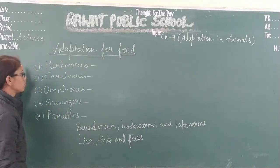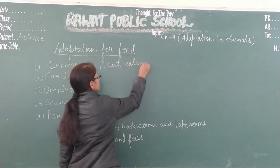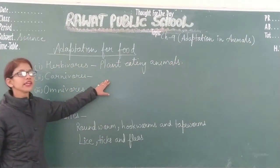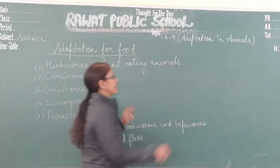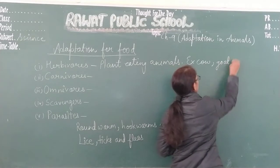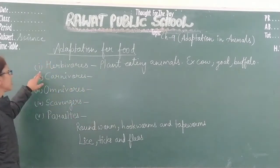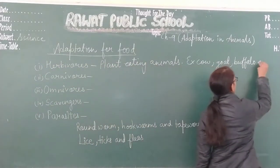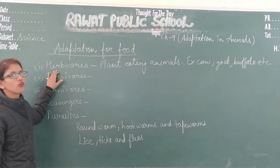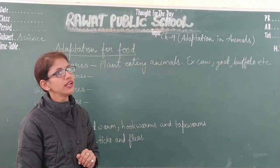First is herbivores. Herbivores animals are plant-feeding animals — animals that eat only plants and their parts. Examples are cow, goat, and buffalo. They have strong front teeth to tear leaves and strong grinding teeth to chew the plant parts.